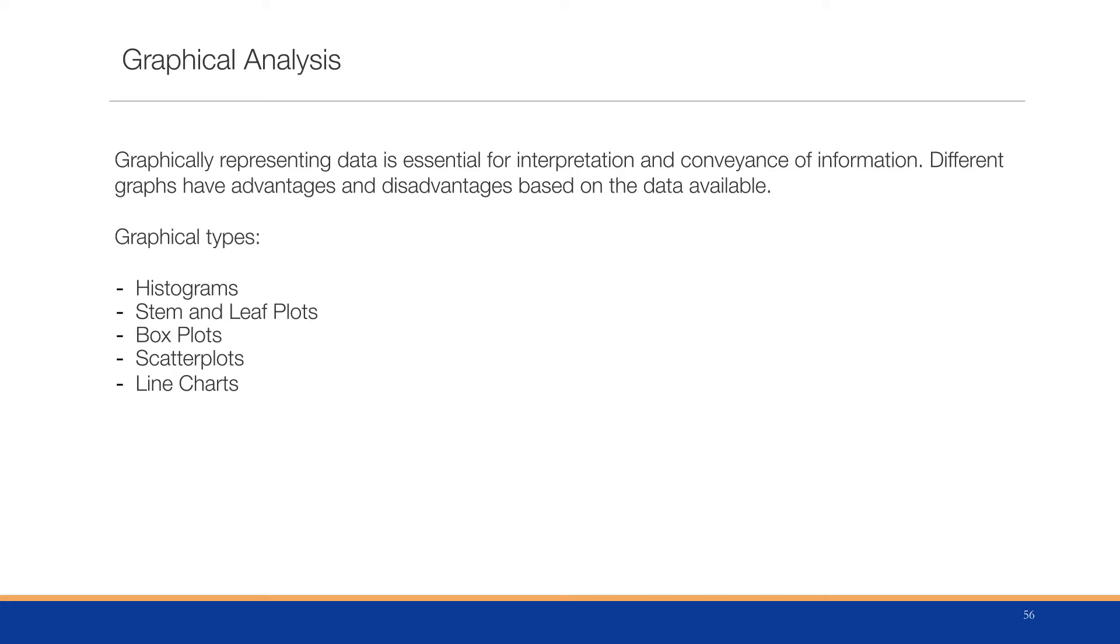We have histograms, which are very common to tell us frequency counts, stem and leaf plots, which are similar and related to histograms, box plots, which will tell us more about a particular column, scatter plots, the relationship between two columns, and line charts, which will give us more information about time-based information.